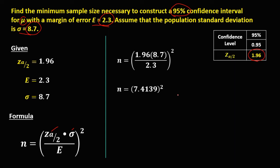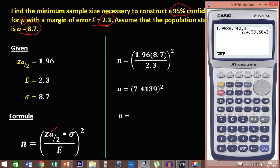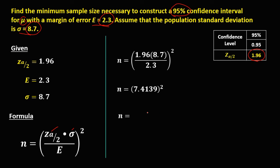To solve for the sample size, we take the square of 7.4139. This gives us 54.9. Since sample size always rounds up, the final answer is 55. So 55 is the sample size.